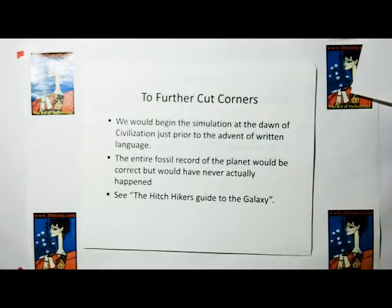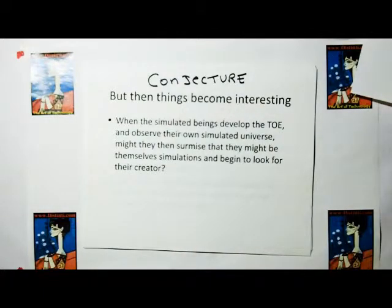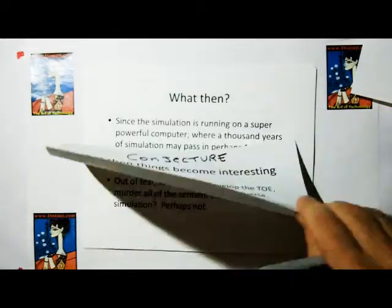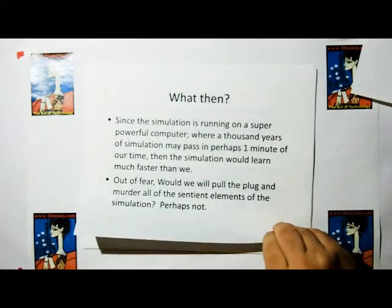This is kind of the idea from the Hitchhiker's Guide to the Galaxy, or is it the universe? I can't remember. But then things become interesting. When the simulated beings develop the theory of everything and observe their own simulated universe, might they then surmise that they might themselves be a simulation and begin to look for their creator? What then? Well, since the simulation is running on a super powerful computer, where a thousand years of simulation time may pass in perhaps one minute of our time, then the simulation would learn much faster than we, so out of fear would we pull the plug and murder all the sentient elements of the simulation? Perhaps not.